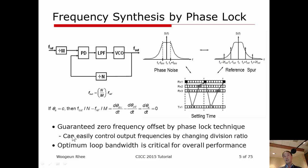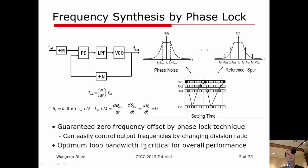There are three critical parameters in synthesizer design: phase noise, reference spur, and settling time. Since those parameters are all very sensitive to the bandwidth of the PLL, having an optimum loop bandwidth is very important to achieve good overall performance.